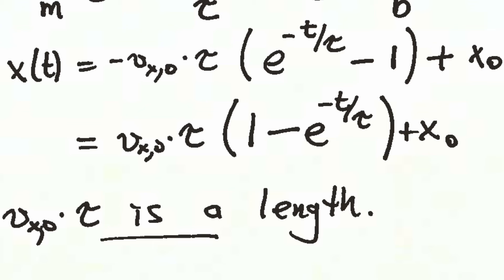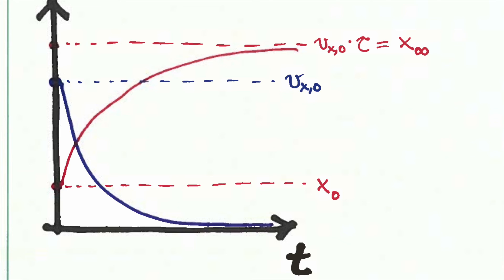So now let's make a plot of both the velocity as a function of time and the displacement to develop some intuition for what these equations are actually telling us. Here's a plot of velocity in blue and displacement in red. The initial velocity is vx0, and that's shown as being the beginning of the blue line. And over time, you can see that the velocity drops and then asymptotically approaches zero.